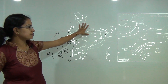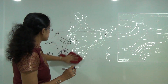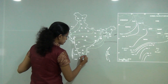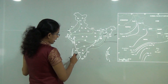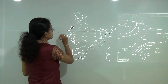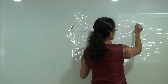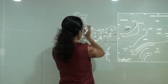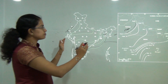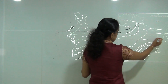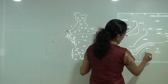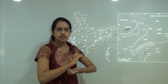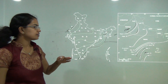The onset of monsoon map shows it begins at the southernmost tip of India by June 1st, reaching the fifth of June marker and the northwest by July 15th. The retreat starts from September 1st in the northwest, progressing to September 15th and finally reaching the south by late November to December. The western most region receives the minimum period of rainfall, making it one of the driest regions.